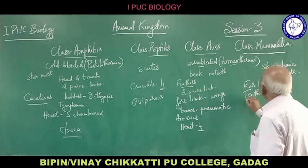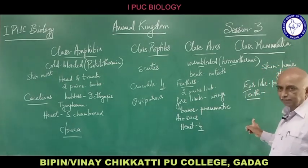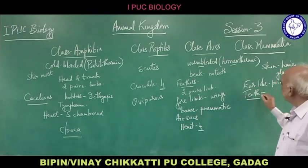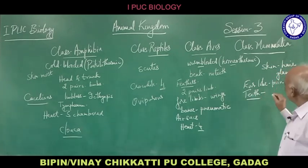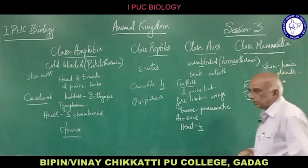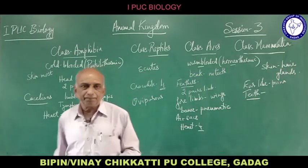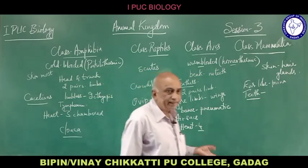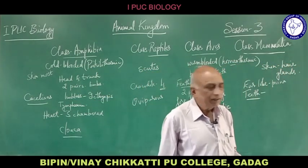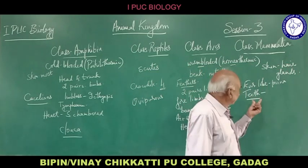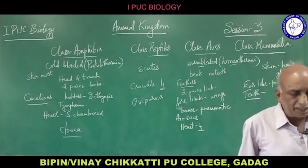The heart is four-chambered. Teeth are well developed in the jaws, and there are four types of teeth: incisors, canines, premolars and molars. That is an important characteristic feature of class Mammalia.